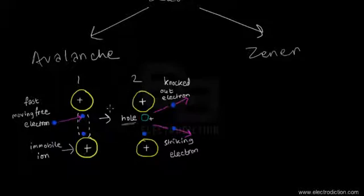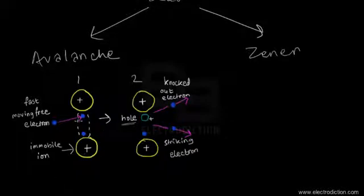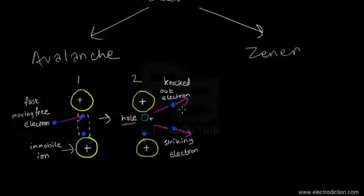In avalanche breakdown, one free electron collides with others and they multiply — colliding with many more — so we go from one to two, two to four, four to eight, and this process just accumulates over time.